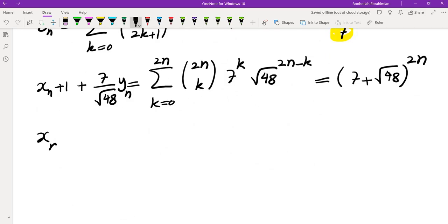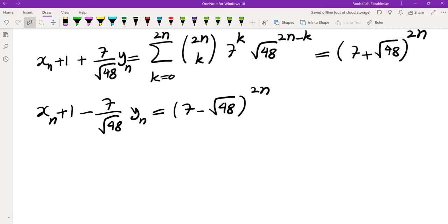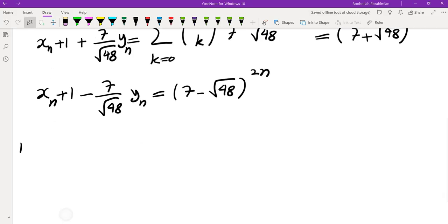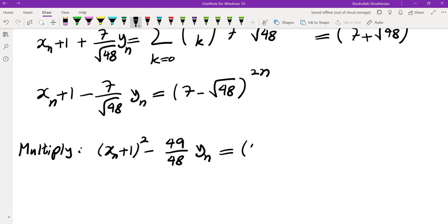If you do something very similar, you would get xn plus 1 minus 7 over root 48 yn equals 7 minus root 48 to the power of 2n. Now if you multiply these two, you get xn plus 1 squared minus 49 over 48 yn squared equals 49 minus 48 to the power of 2n, which is 1.